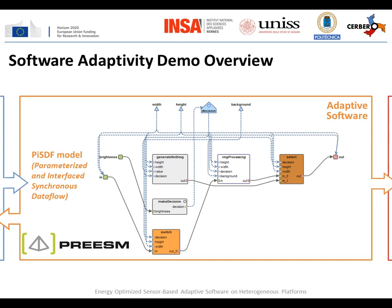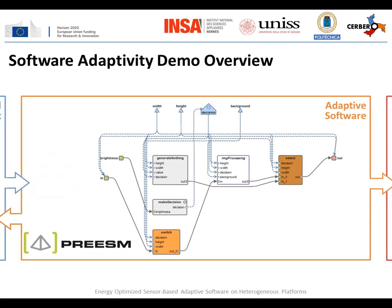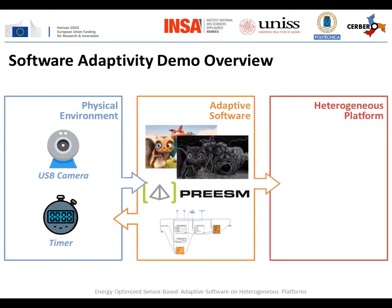Reconfiguration behavior in the PISDF model is supported by allowing an actor to change the value of a graph parameter during execution. For example, the parameter highlighted in red, whose value is set by the actor, is responsible for activating and deactivating the filtering of a color component. The PISDF model of computation provides all the necessary semantics to specify parallel, reconfigurable, and portable adaptive applications.